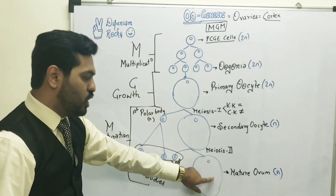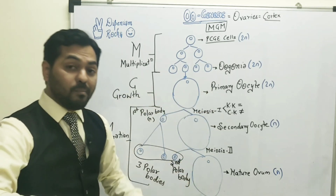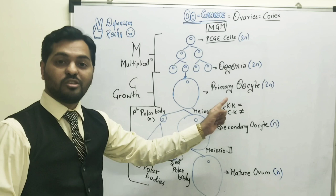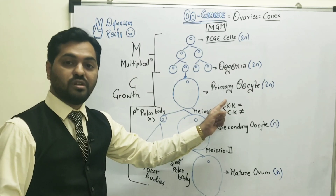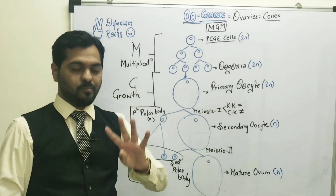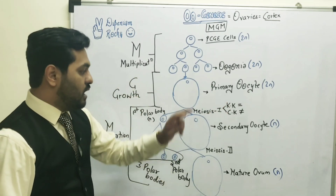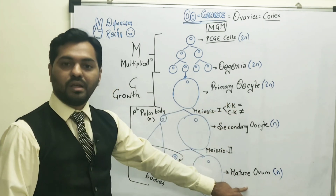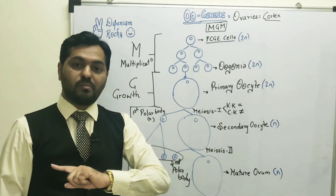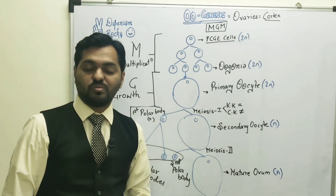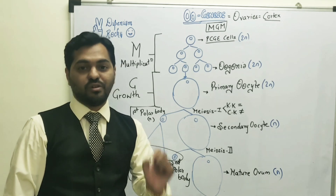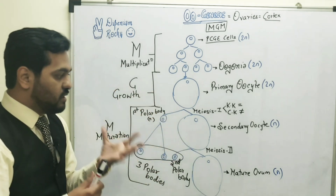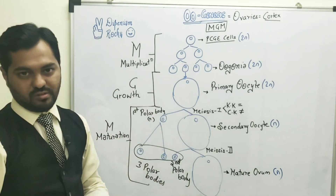In oogenesis, one primary oocyte produces only one mature ovum, so 100 primary oocytes give 100 ova. Compare this with spermatogenesis, where 100 primary spermatocytes generate 400 sperm cells. This is a basic and important difference between the two processes.